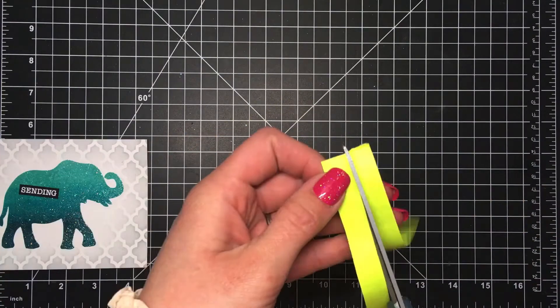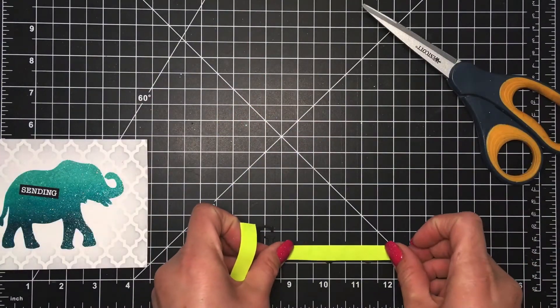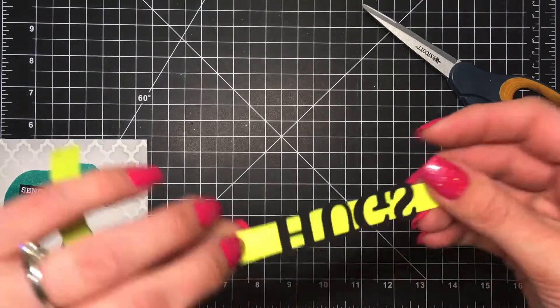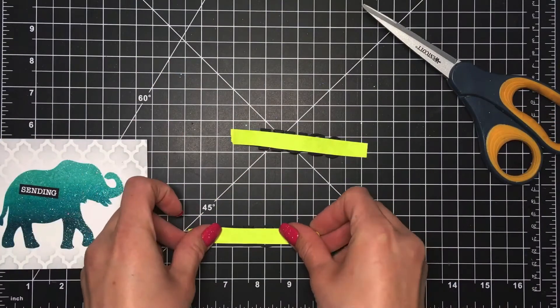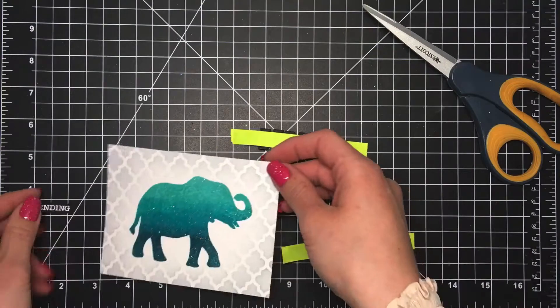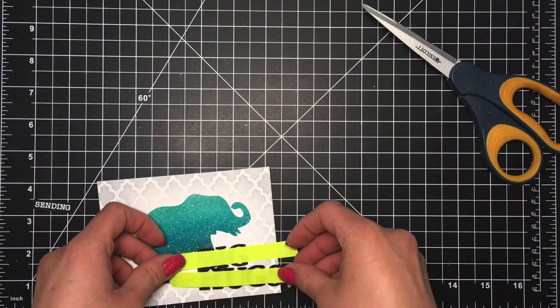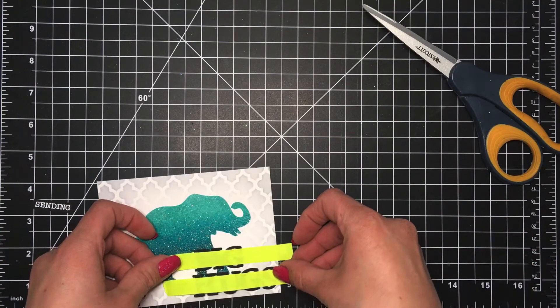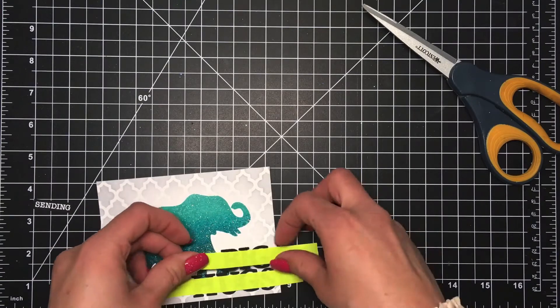Then I've got a piece of post-it tape here that I used some scissors to cut in half and I will pick up those letters using that so that it would keep them straight where I wanted them. Here I'm just finding where I want them placed on the card panel.